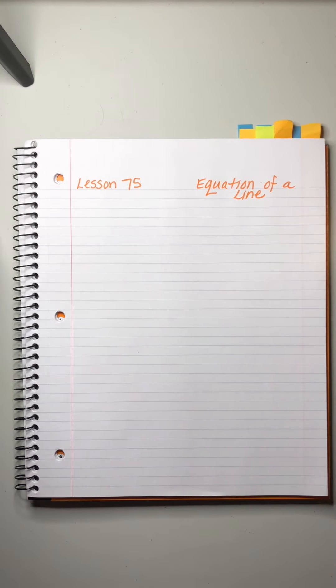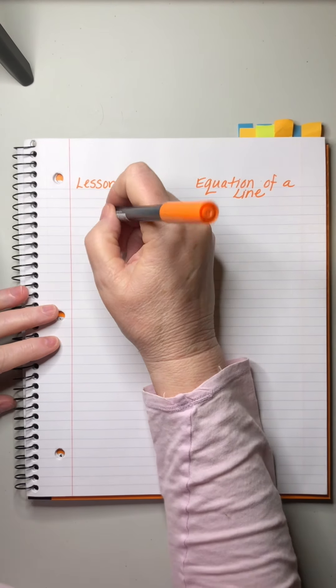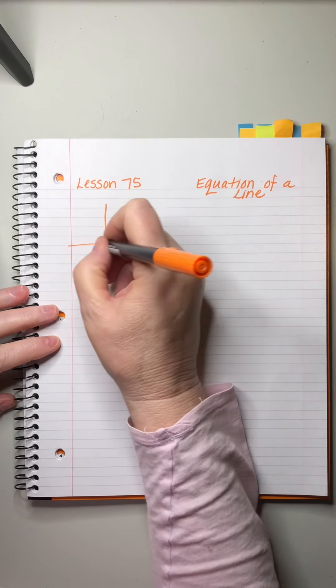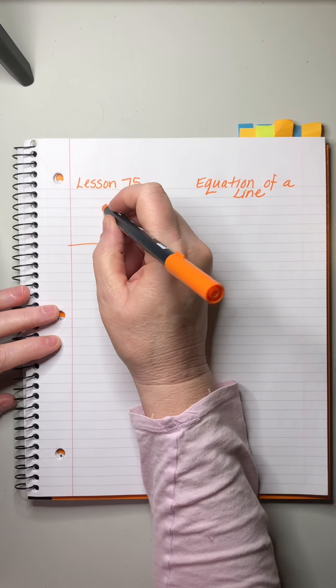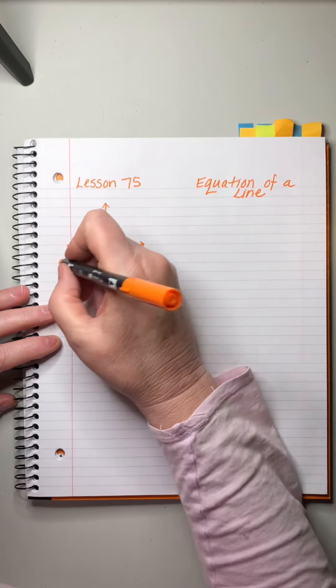Saxon Algebra 1 Lesson 75. It's a red-letter day, guys. We are going to talk about equations of lines.